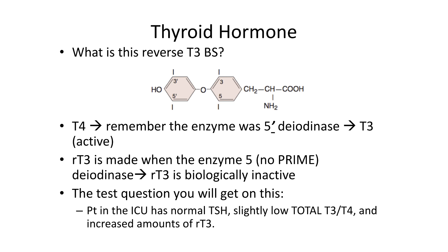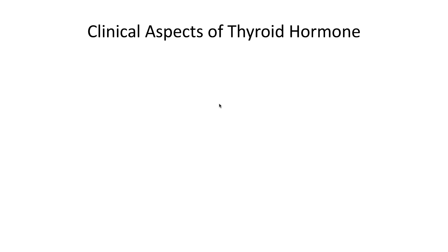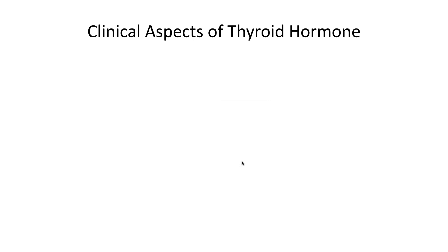This is tested through euthyroid sick syndrome, in which the patient has a normal TSH but slightly low total T3 and T4 with increased amounts of reverse T3. Essentially, in stress, T4 gets converted to reverse T3 rather than T3. The next video will cover thyroid pathology and clinical aspects of thyroid hormone.